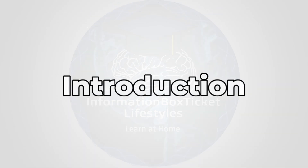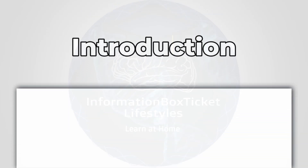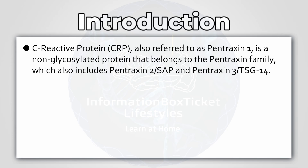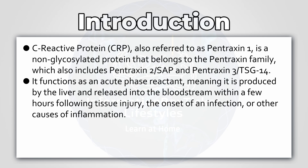Introduction to C-Reactive Protein. C-Reactive Protein, also referred to as pentraxin-1, is a non-glycosylated protein that belongs to the pentraxin family, which also includes pentraxin-2/SAP and pentraxin-3/TSG-14. It functions as an acute phase reactant, meaning it is produced by the liver and released into the bloodstream within a few hours following tissue injury, the onset of an infection, or other causes of inflammation.